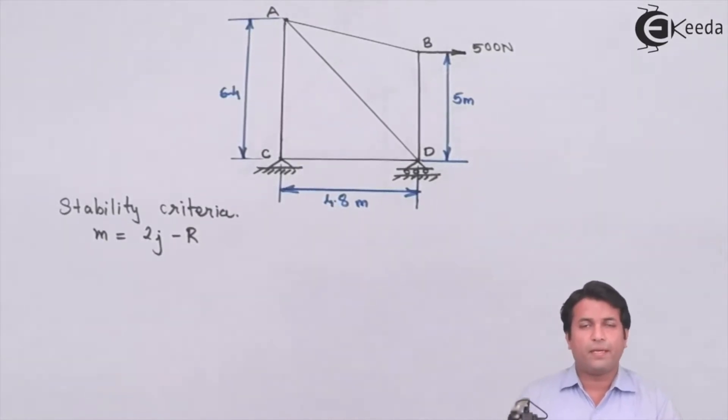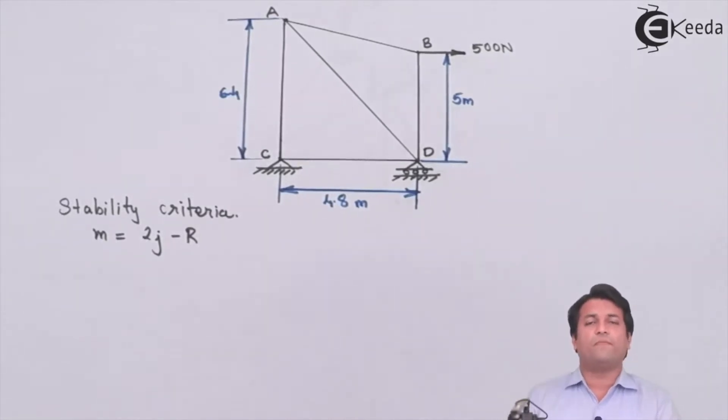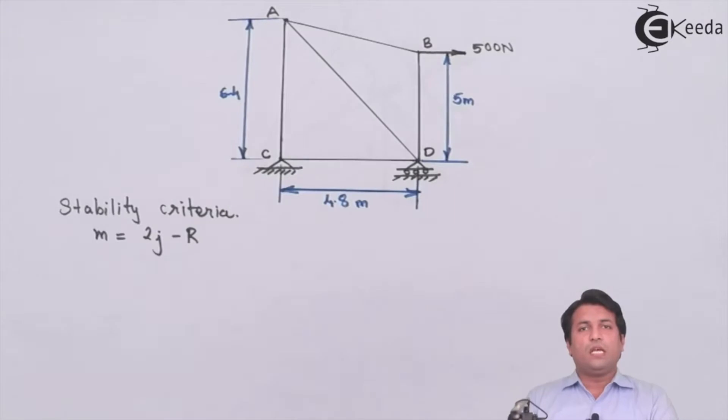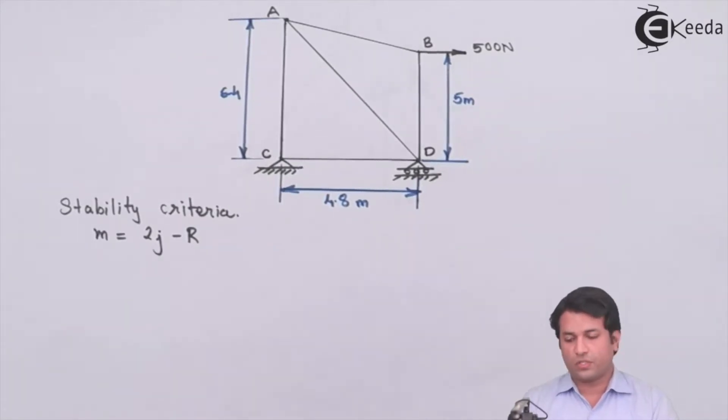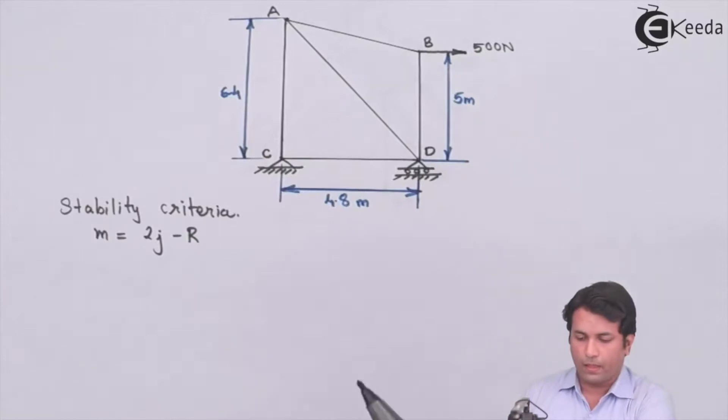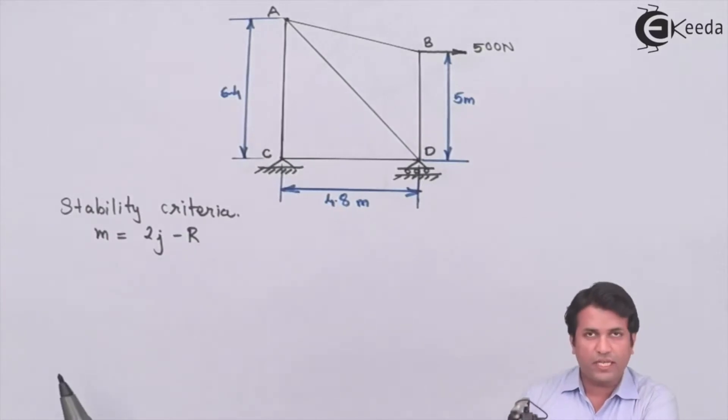We know the stability criteria is M equals 2J minus R, where M is the number of members, J is the number of joints, and R is the number of reactions.